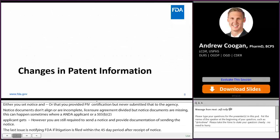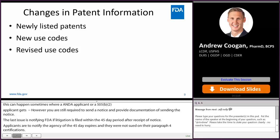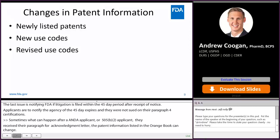Changes in patent information. Sometimes, after an ANDA applicant or 505B2 applicant receives their paragraph 4 acknowledgement letter, the patent information listed in the Orange Book can change. There can be newly listed patents, new use codes listed with previously listed patents, or use codes can be revised. These situations require action on the part of 505B2 and ANDA applicants.